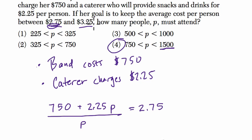You can try it for equaling $3.25, and when you solve it, you will get 750. So if 1,500 people show up, she'll only be paying $2.75 per person. If 750 people show up, she'll be paying $3.25 per person. She'll be paying more per person.